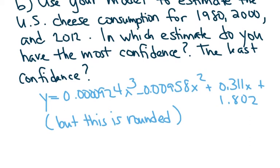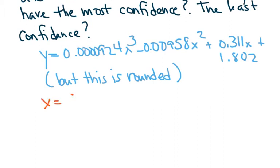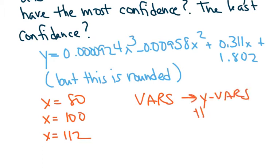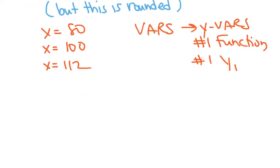All right, since we're doing an estimate for 1980, 2000, and 2012, that means we're going to use X is 80, X is 100, and X is 112. So now that it's saved our calculator, we can do this neat little trick where we call up Y1 and tell the calculator to plug 80 in place of X. You do that by going to VARS, YVARS, number one, function, number one, Y1. So now on your home screen, it should say Y1. And then just put parentheses 80 and hit enter. You'll do the same thing for 100 and for 112. And this is what pops up.